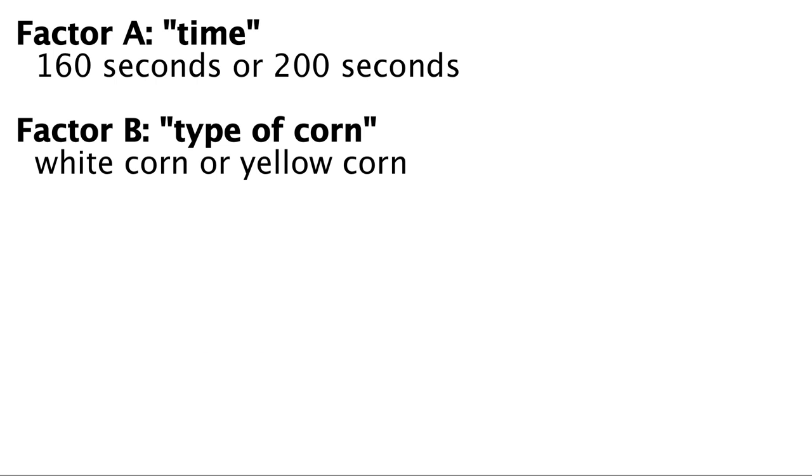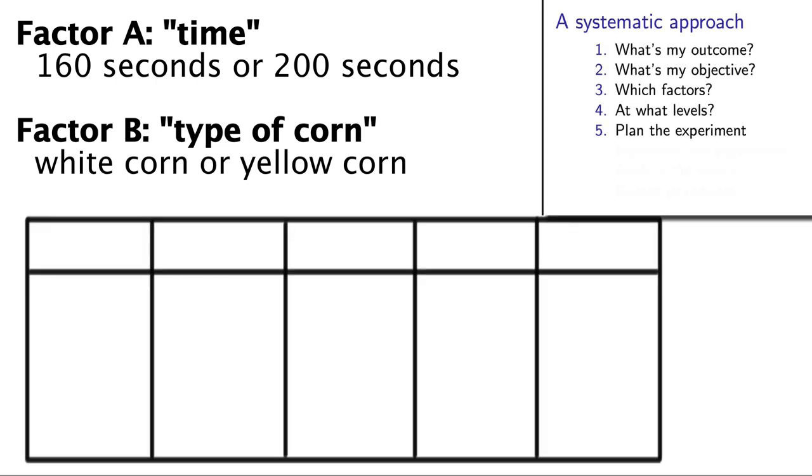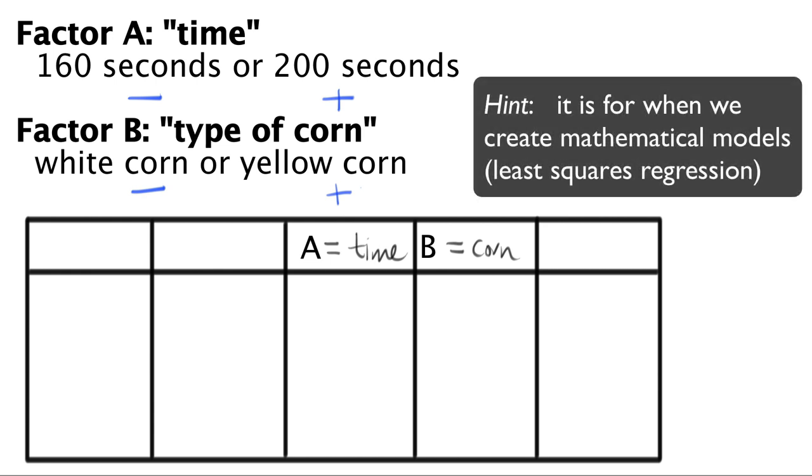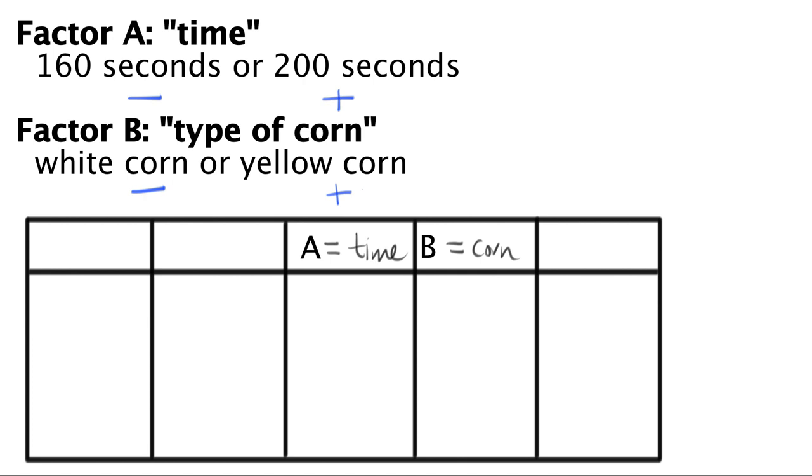We will write them in a table first, as follows. Let's pick cooking time and call it factor A, then call the type of corn factor B. So there are two columns, one for A and one for B. We use minus signs to indicate a low level for a factor, and a plus sign to indicate a high level. You will hear me say this a few times, but I hope you will believe me. I promise it will be clearer by the third module why we use minuses and pluses. The standard approach is to vary the signs for factor A the fastest. So put minus, plus, minus, plus in the first four rows for that column A.